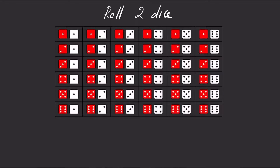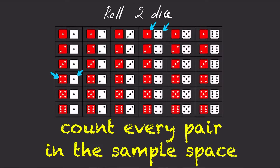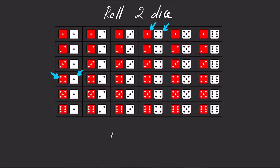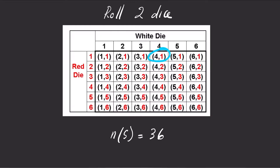Roll two dice — one is red and the other is white. You might get a 1 on the red die and a 4 on the white die, or a 4 on the red die and a 1 on the white die. By counting all possible outcomes listed in the sample space, the total is 36. Instead of using images to list the sample space, we could also use pairs of numbers.